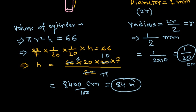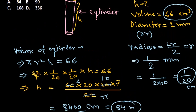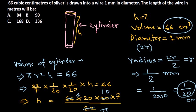So the answer is 84 meters. So the height of this is 84 meters. So the length of the wire is 84 meters. And here we go - option A is telling us that yes, the length is 84 meters. So h equals to 84 meters in this case.